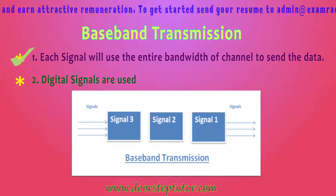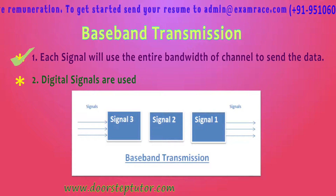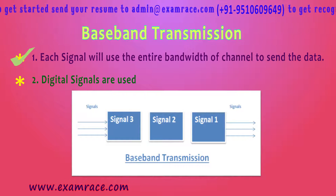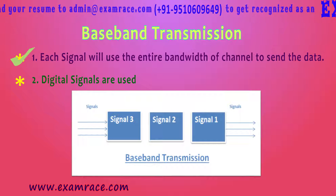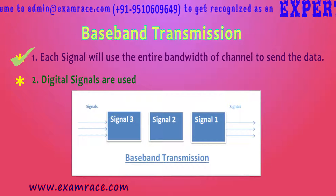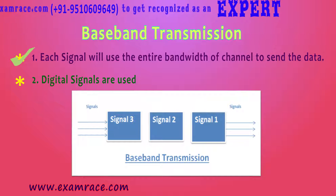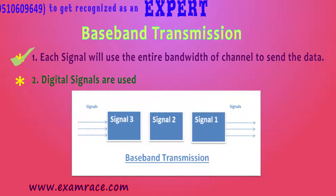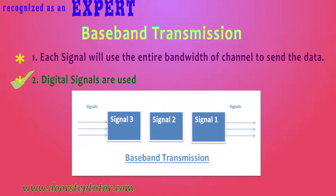The first point is: each signal will use the entire bandwidth of the channel to send the data. It means the entire bandwidth will be used by one signal at a time. Signal 1 uses the entire bandwidth, then signal 2 comes across the channel and uses it, then signal 3, and so on. This is the basic working of baseband transmission, which we can also understand through the diagram in the slide. Digital signals are basically used here.